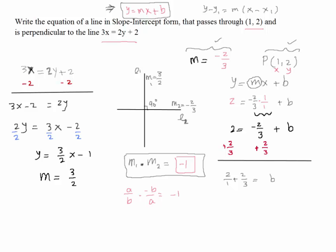So how would you add these? I'll make sure they have a common denominator. Which is 3. So I'm going to multiply this by 3 over 3. So now I can add these two. So you have 6 over 3 plus 2 over 3 is equal to b, which is equal to 8 over 3.